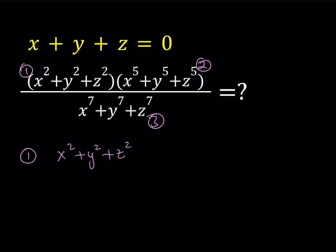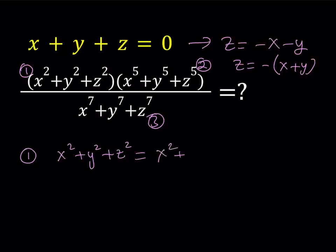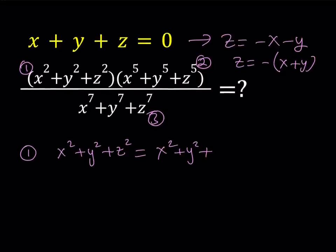For number 1, since x plus y plus z is equal to 0, I'd like to replace z with negative x minus y, which can be written as the quantity x plus y multiplied by negative 1. So I have x squared plus y squared, and z squared will be replaced with that. When you square that expression, it is going to be the same as x plus y quantity squared. Let's go ahead and simplify that expression now.